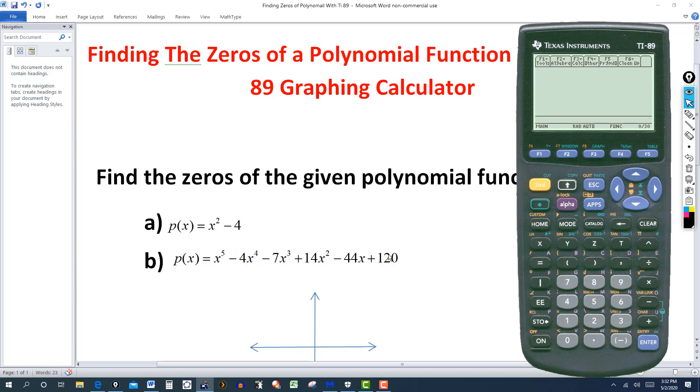So, you would try plus or minus 1 as a zero, plus or minus 2, all the divisors of 120, plus or minus 3, plus or minus 4, plus or minus 6, plus or minus 12, and so on. And try those as your zeros and get it down to a quadratic. And once you get it down to a quadratic, you can try to factor it, if it factors into real factors.